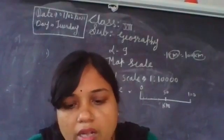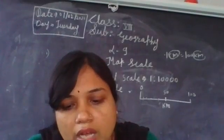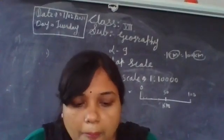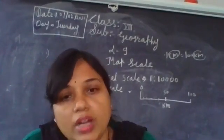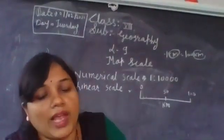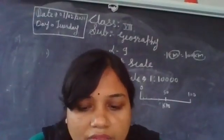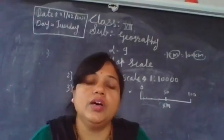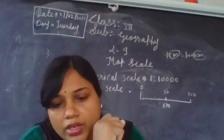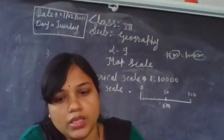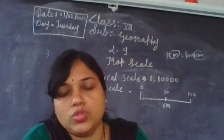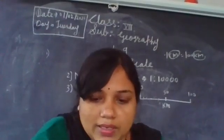Usually the verbal and numerical scale values do not change — only the font size changes. Hence, graphical scales are drawn in atlas and wall maps. Usually wall maps and atlases use the graphical scale.